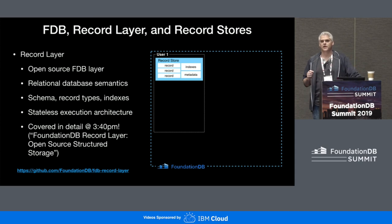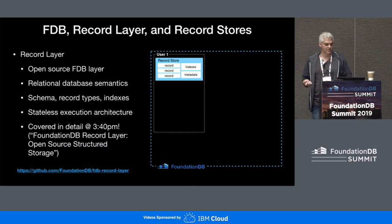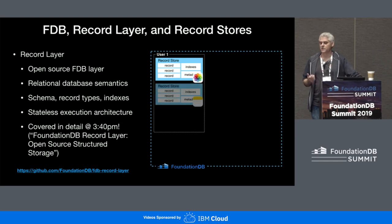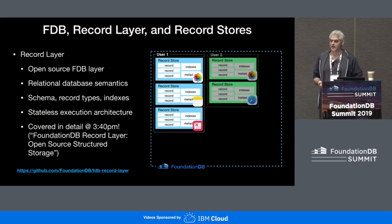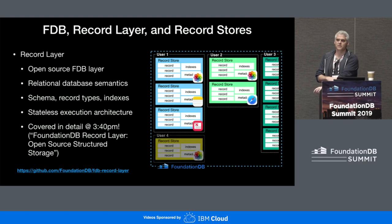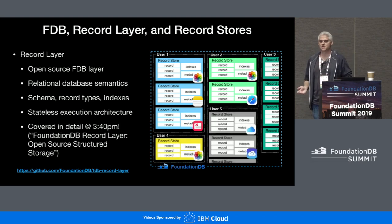For example, let's say the key at which we locate our record store has the first part as the user ID and the second part as the application. This allows us to have a series of databases that all belong to a user, contiguously located next to each other, each completely self-contained. Thus within our cluster we can be housing millions of users and many tens of millions of databases.